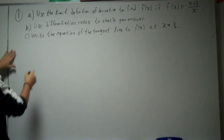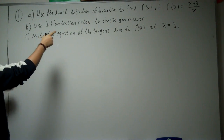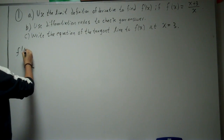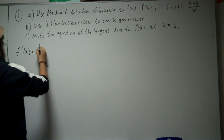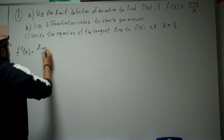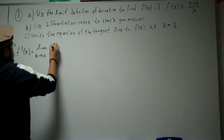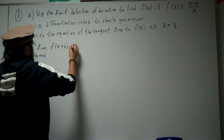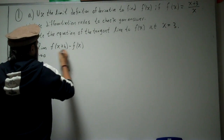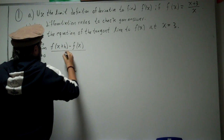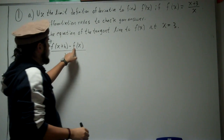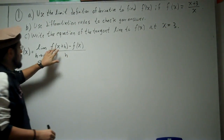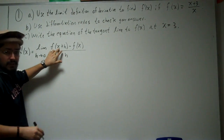We need to find f prime of x using the limit definition of derivative. That means f prime of x is the limit as h approaches 0 of f of x plus h minus f of x, all divided by h. We already have f of x, so we need to find f of x plus h.